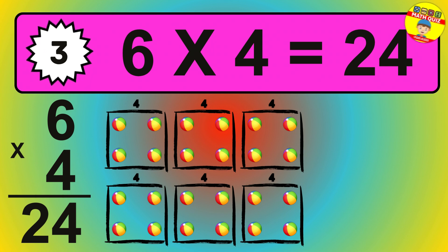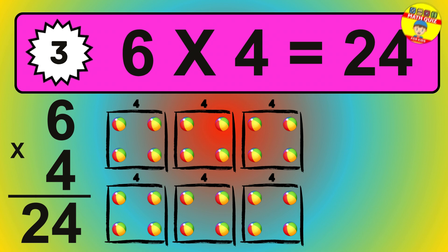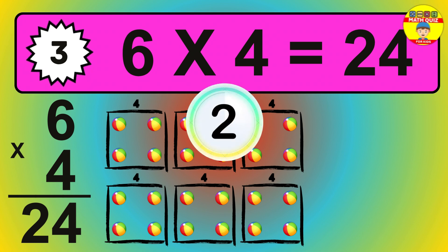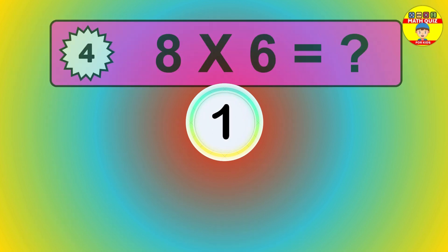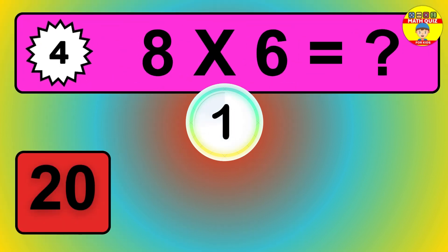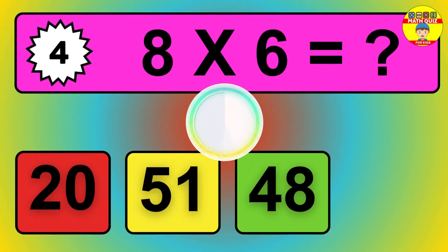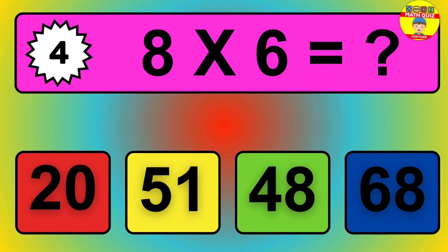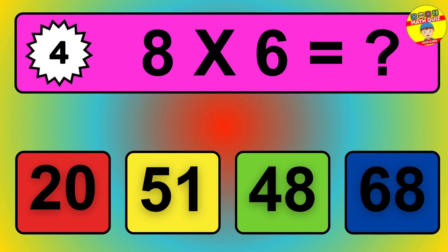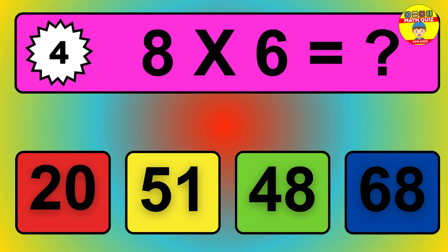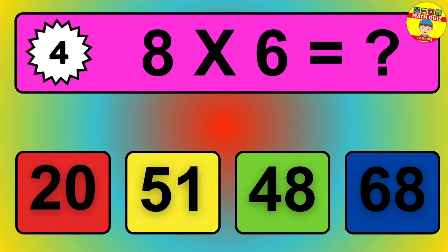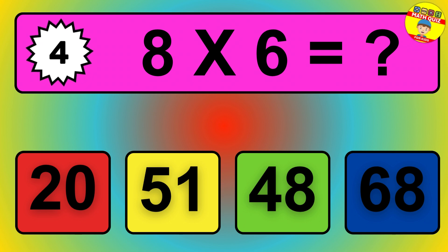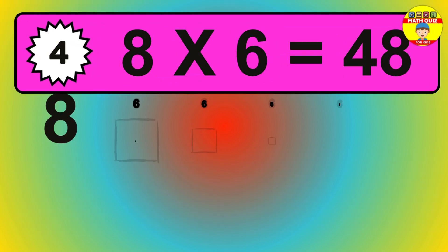Question 5. 8 times 2 equals what? The answer is 8 times 2 is 16. To calculate, we have 8 groups with 2 balls each one. So, how many balls do we have? 16 balls.